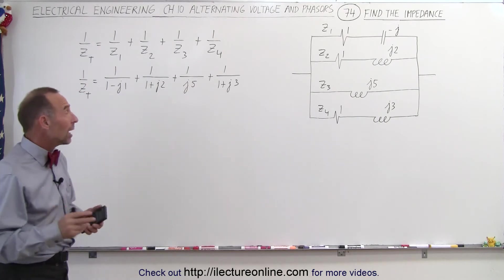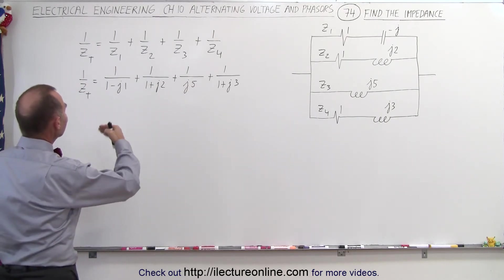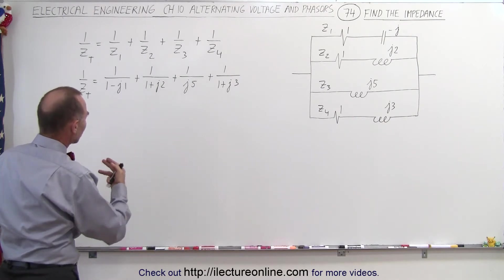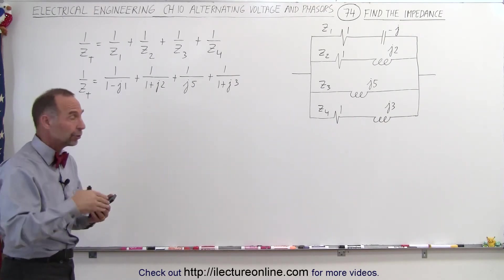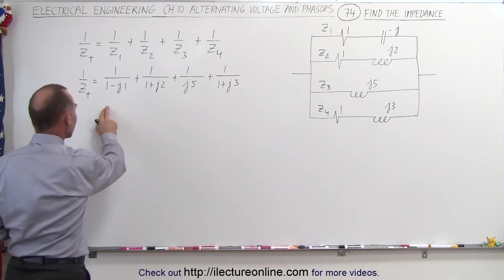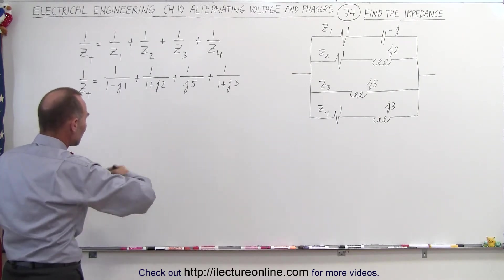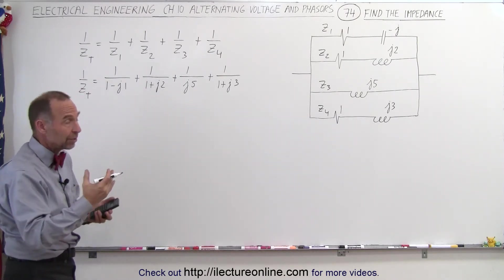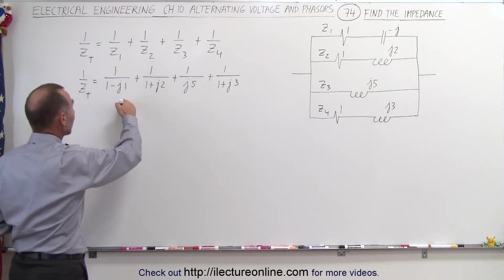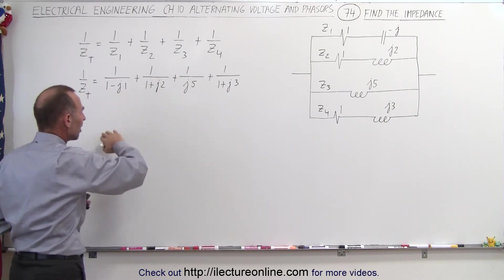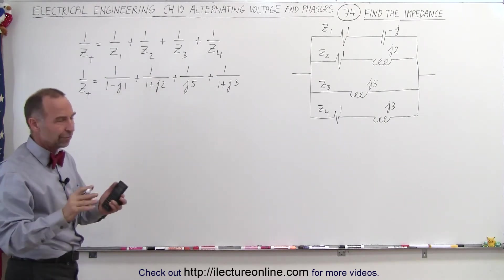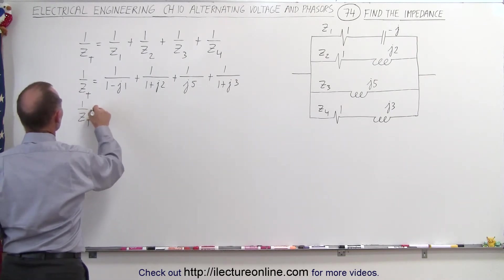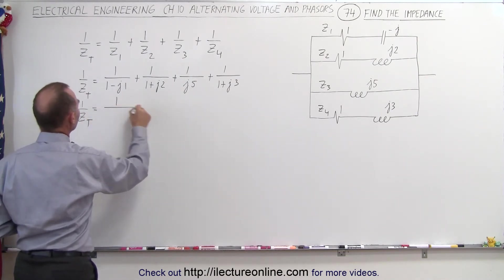The next thing we need to do is find the inverse of each of these terms. But before we can do that, the best thing to do is to convert each into magnitude and phase angle form, because that makes it easier to take the inverse. Another option would be to multiply both numerator and denominator by the complex conjugate of the denominator, but it's just easier to convert to magnitude and phase angle.